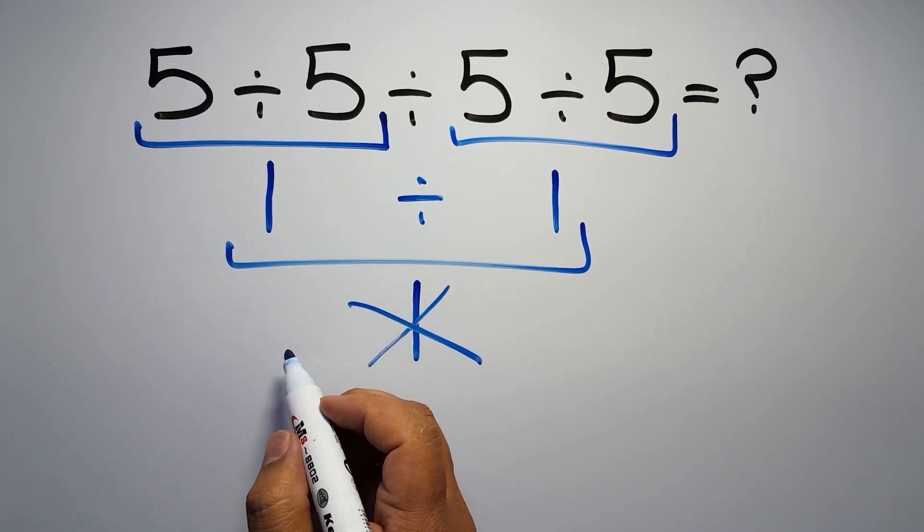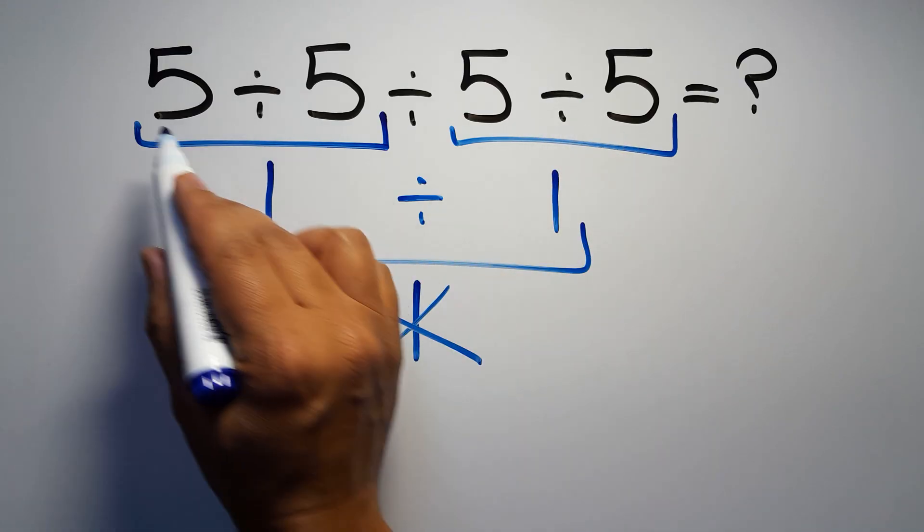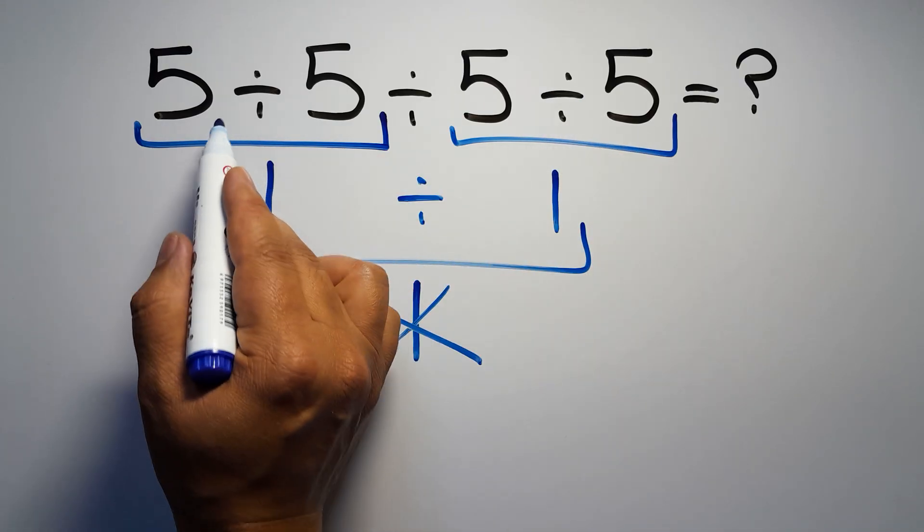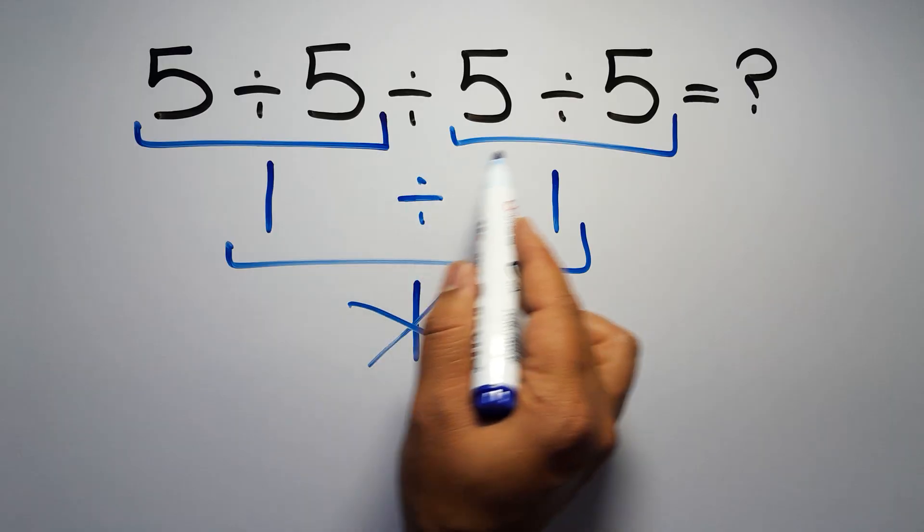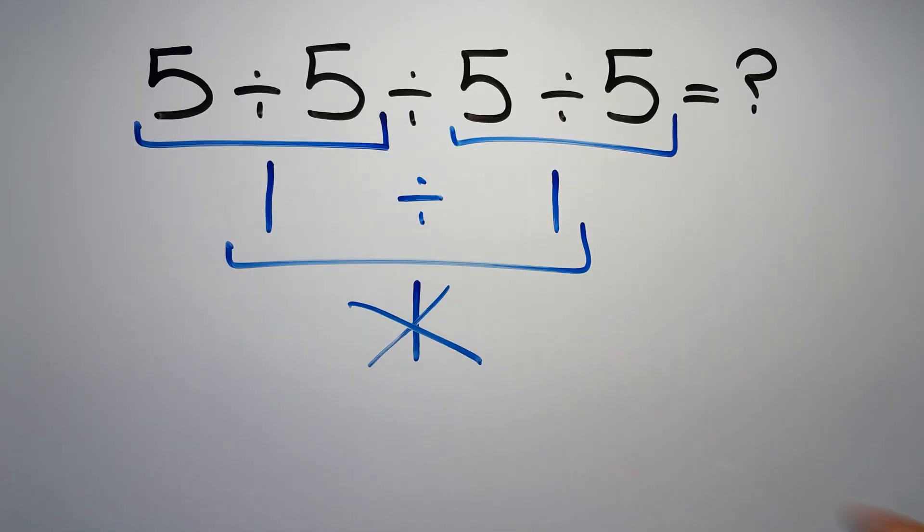Because according to the order of operations, when we have more than one division in an expression, we have to work from left to right. So here first we have to do this division, then this division, and finally this division. If we do this division before this division, it is wrong.